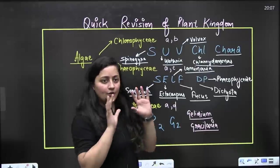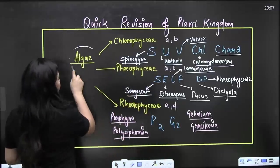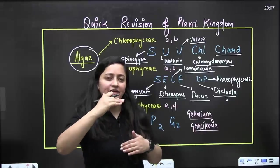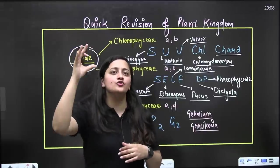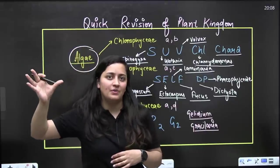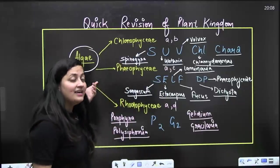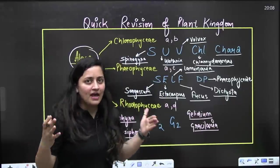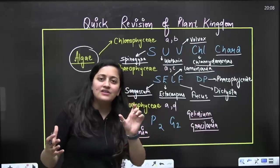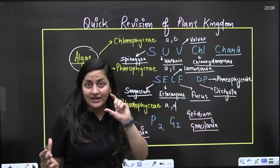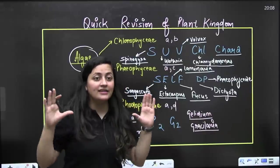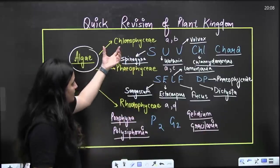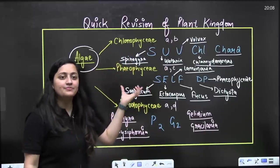We are going to start with algae — the simplest plant — then bryophytes, pteridophytes, gymnosperms, and angiosperms, which are highly advanced plants. Algae has a haplontic life cycle; the main plant body is gametophytic. The zygote is the only sporophytic cell — the only diploid cell — otherwise it is basically haploid. In algae, we need to focus on the classes and their examples.